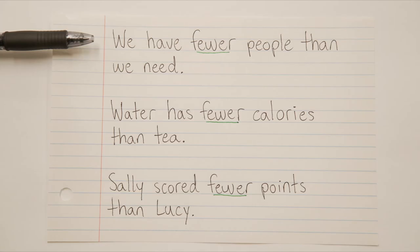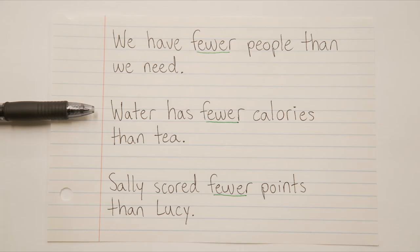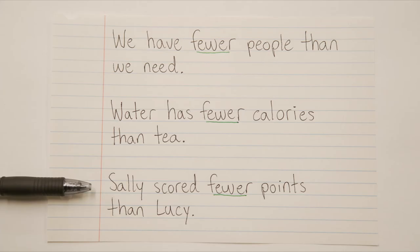We have fewer people than we need. The word in question here is people, and we can count that word — two people, three people, four people. Since people is a word that can be counted, we use fewer. Similarly: water has fewer calories than tea. Calories is a word that can be counted — 10 calories, 20 calories — so we use fewer. And: Sally scored fewer points than Lucy. Points can be counted, so we use fewer.